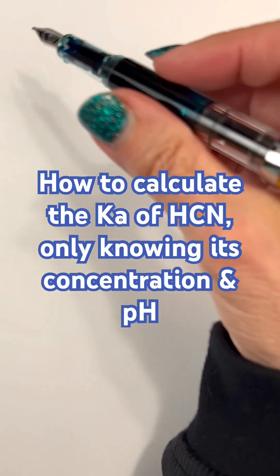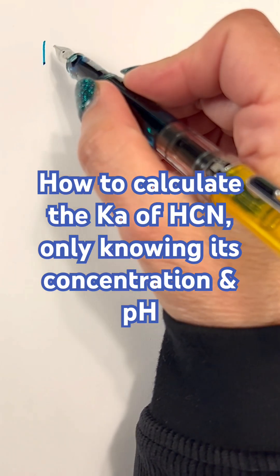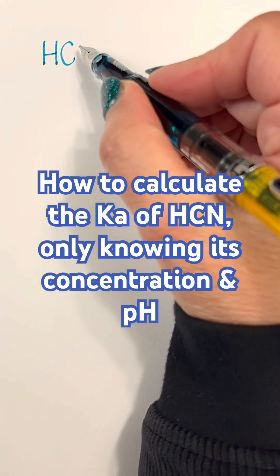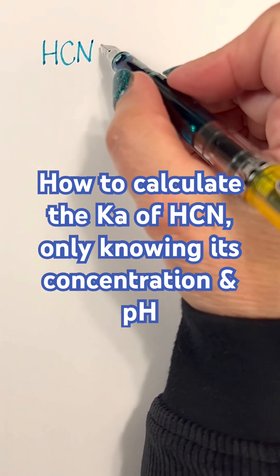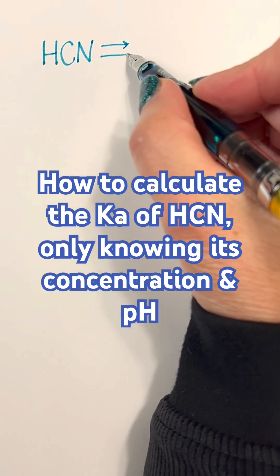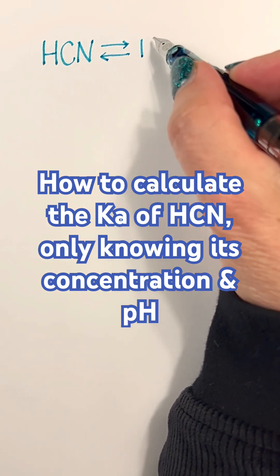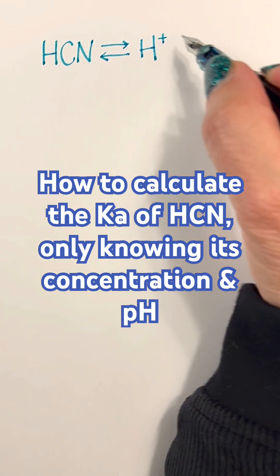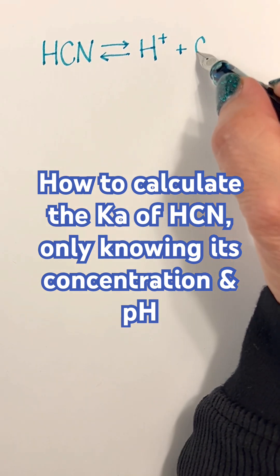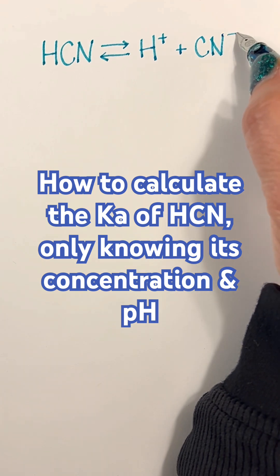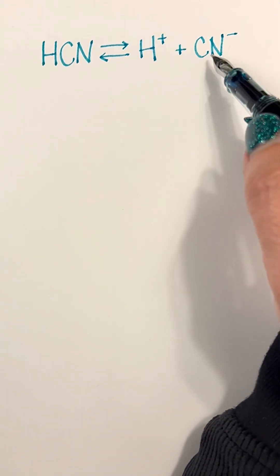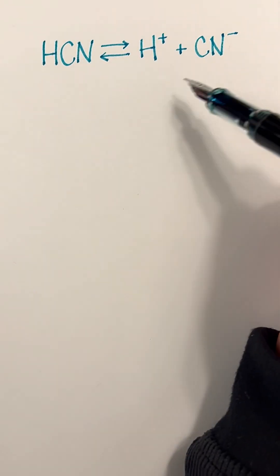Let's look at a weak acid, specifically HCN. In solution, this breaks apart to a very small degree because it is a weak acid, giving us hydrogen ions and CN minus ions.